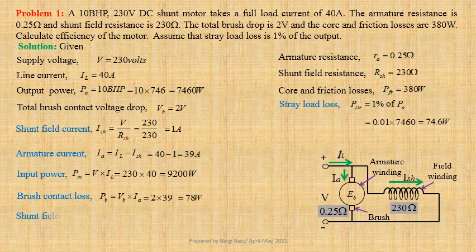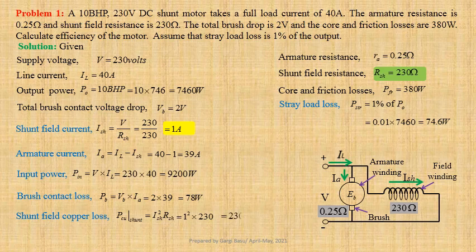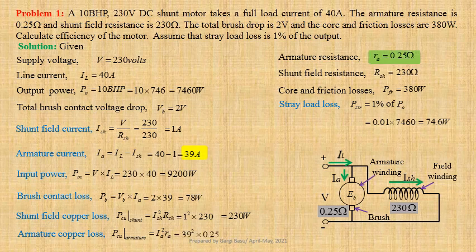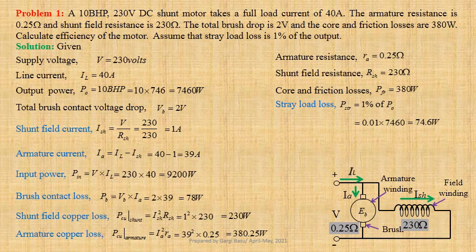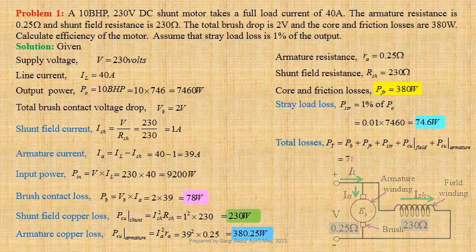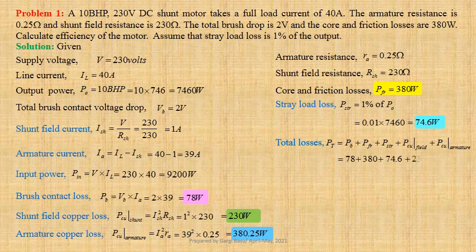Shunt field copper loss: P_copper_shunt equals ISH² times RSH, that is 1² times 230, giving us 230W. Armature copper loss: P_copper_armature equals IA² times RA, that is 39² times 0.25, giving us 380.25W. Total losses PT equals PB plus PFR plus PSTR plus P_copper_field plus P_copper_armature. Using values: 78 plus 380 plus 74.6 plus 230 plus 380.25, giving us 1142.85W.